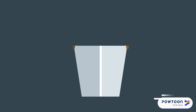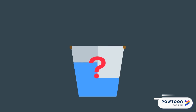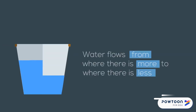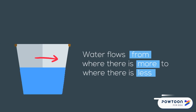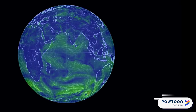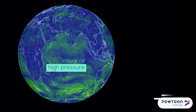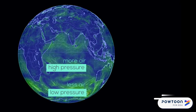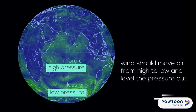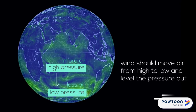Imagine you have two containers of water, one holding more than the other, and you take the barrier between them away. The water flows from where there is more to where there is less, and the water levels out. So in the atmosphere, if there is more air in one place — high pressure — and less elsewhere — low pressure — the wind should move air from high to low and level the pressure out. But this doesn't happen.